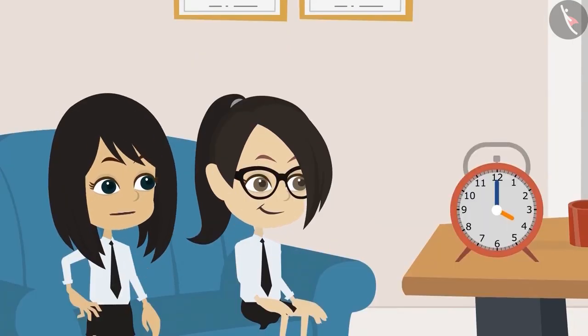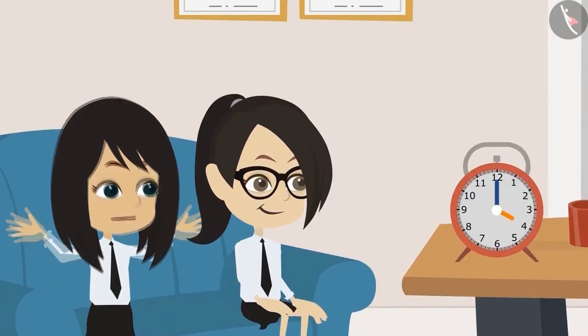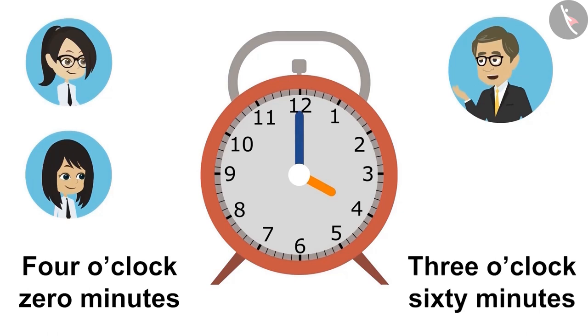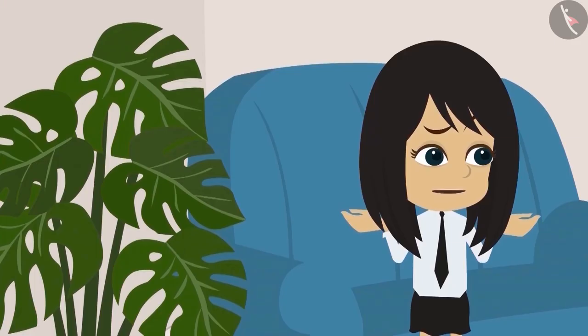Sir, how will you read the time of this clock? 0 minutes past 4 o'clock or 60 minutes past 3 o'clock? Both are correct, but 0 minutes past 4 o'clock is more appropriate. How, sir?